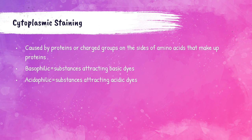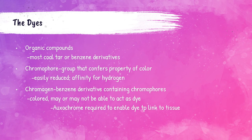The IEP of proteins is around pH 6. Below the IEP, the net charge on the proteins is positive and the attraction is for an anionic dye. Above the IEP, the net charge is negative and it attracts cationic dyes. Those that attract basic dyes are referred to as basophilic, and those that attract acidic dyes are referred to as acidophilic.